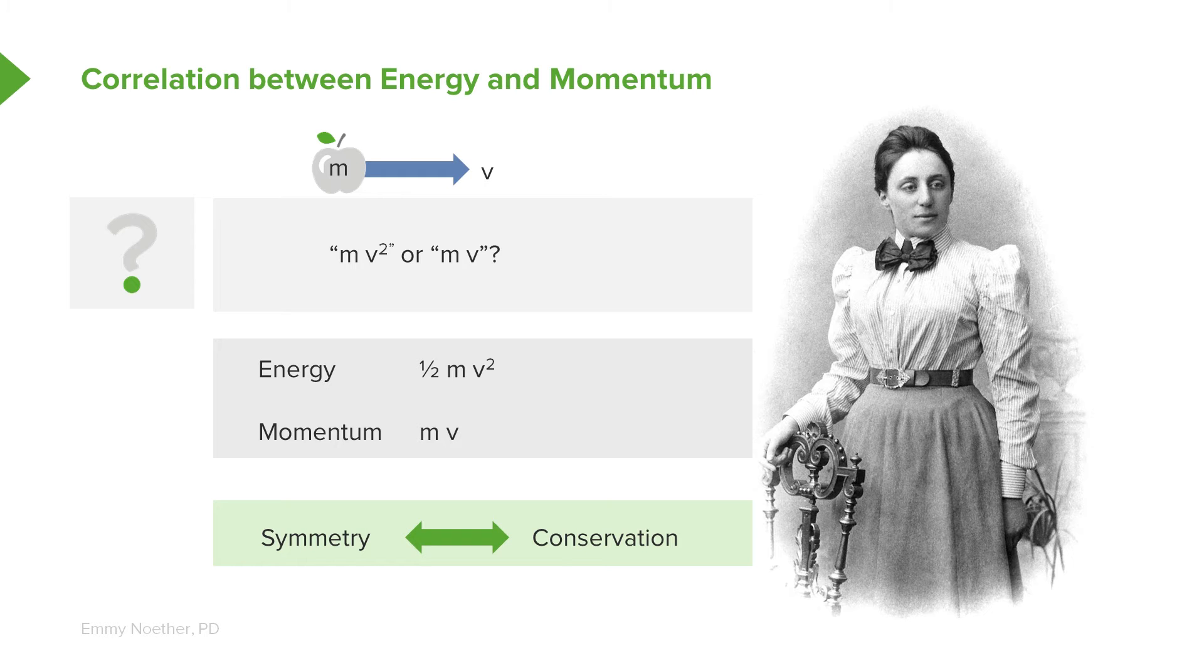And what Emmy Noether was able to do was to understand that the reason that there are conservation laws anywhere in nature, like conservation of energy or conservation of momentum, is that there are symmetries in nature. And she was able to show that for any symmetry in nature, meaning all the laws of physics are the same at this position in space, as well as that position in space. For any such symmetry, whether it's a symmetry in space or a symmetry in time, there's a corresponding conservation law.